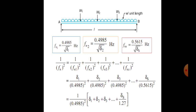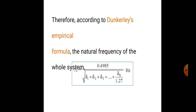For a simply supported beam carrying loads w1, w2, w3, and a uniformly distributed load wl per unit length: fn1 = 0.4985 / √δ1, fn2 = 0.4985 / √δ2, and fns = 0.5615 / √δs. Taking all additions, we get 1/fn² = (0.4985)² × (δ1 + δ2 + δ3 + ... + δs / 1.27). This gives the Dunkley empirical formula for the natural frequency of the whole system.